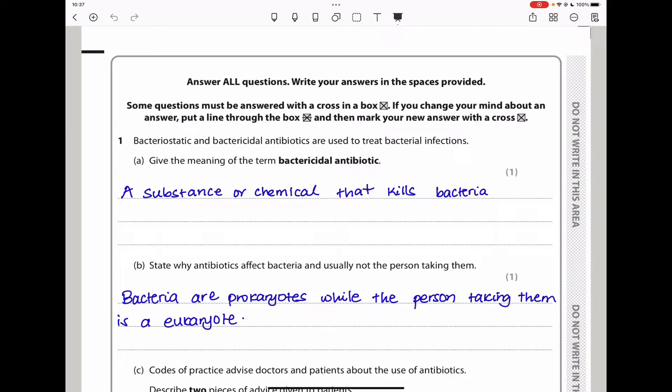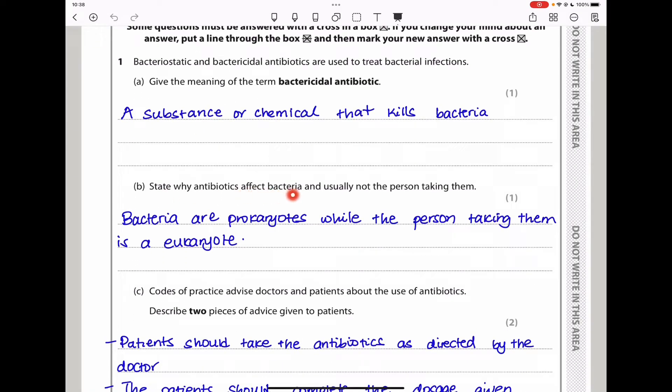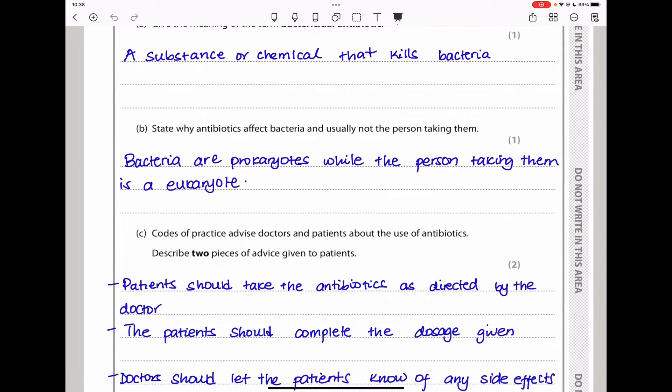Question 1 says, bacteriostatic and bacteriocidal antibiotics are used to treat bacterial infections. Give the meaning of the term bacteriocidal antibiotic. Bacteriocidal antibiotic is a substance or chemical that kills bacteria. The killing part comes from the word cyto, so bacteriokiller or bacteriocidal, they do kill bacteria. The next part says, state why antibiotics affect bacteria and usually not the person taking them. Remember bacteria are prokaryotes while the person taking them is a eukaryote. So in this case, these two have different types of cells and the cells operate differently.